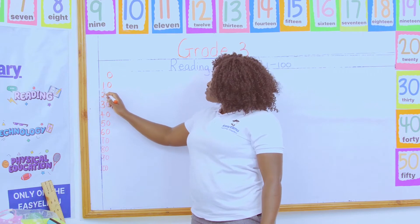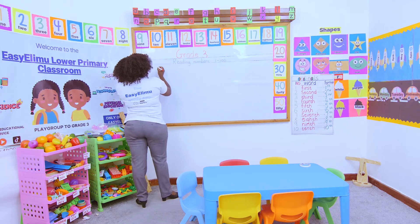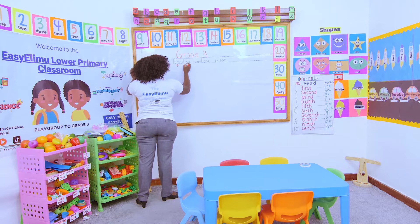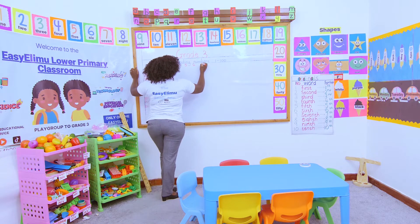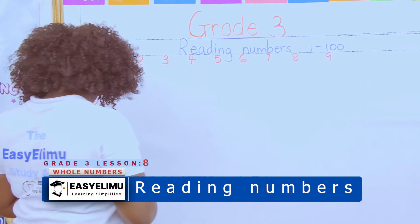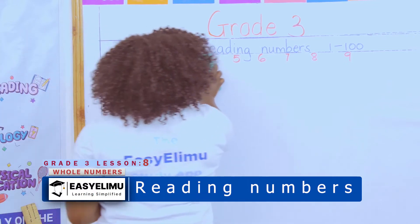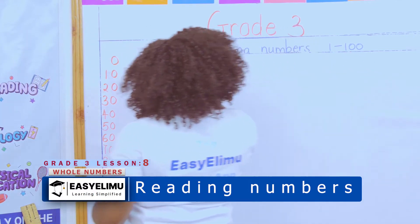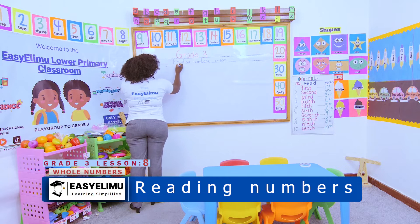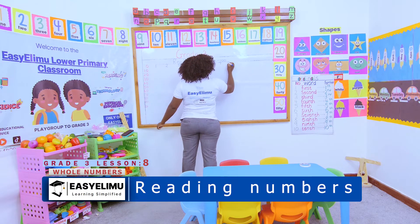When you talk about the numbers that have a ten, you take the number that starts with that number. The main numbers are 1, 2, 3, 4, 5, 6, 7, 8, and 9. These are the main numbers that help us to create all the other numbers.